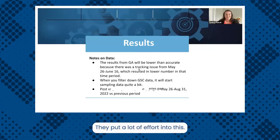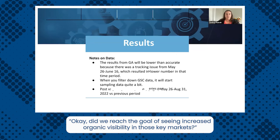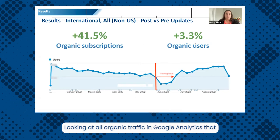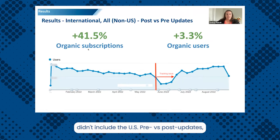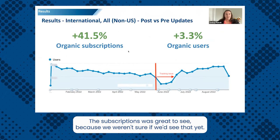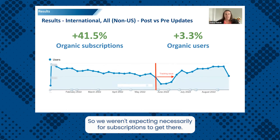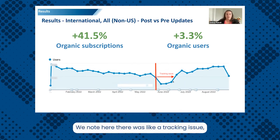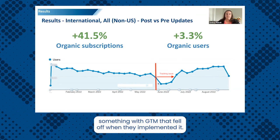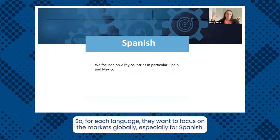They put a lot of effort into this, so of course it's important they get some return. The goal was to see increased organic visibility in those key markets — and the answer is yes. Looking at all organic traffic in Google Analytics excluding the U.S., pre versus post updates, we saw a big increase in subscriptions and some increase in users. The subscriptions were great to see because we weren't sure we'd see that yet, since we're starting from scratch on the organic side. There was a tracking issue — something with GTM that fell off when they implemented it — but when it got fixed, you could clearly see it was back on the rise.